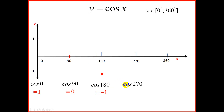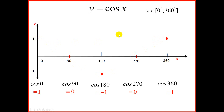Next we're going to type cos 270 degrees and that should give us 0, so at 270 we place our next point. Last we have 360 — type cos 360 on the calculator, that is 1, and at 1 we plot our point. We're now ready to join the dots to get our graph — a very gentle curve — and that is the graph of y equal to cos x in the domain 0 to 360.